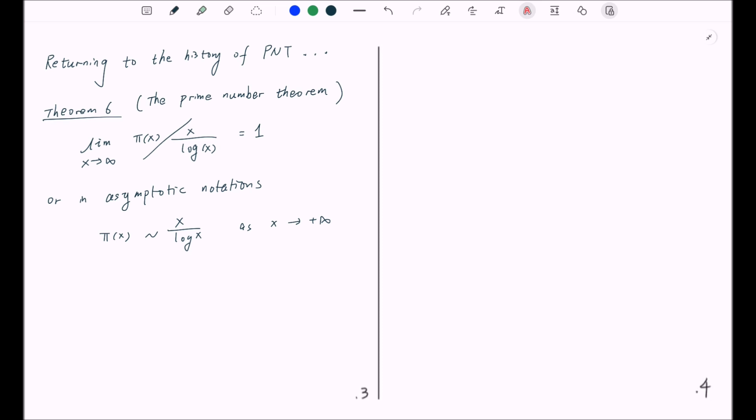The prime number theorem states that the limit as x goes to infinity of the ratio π(x) divided by x over log of x is equal to 1. Or using the asymptotic notations we just introduced, π(x) is similar to x divided by log of x as x goes to infinity.